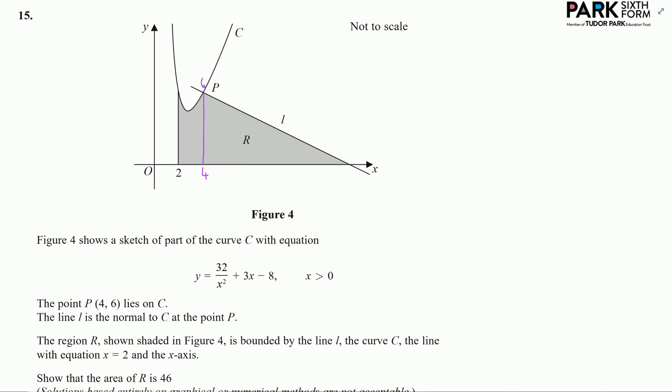I'm asked basically to prove that the region that's been shaded here is 46 units. Now we're going to do this in two parts. We're going to find the area of the triangle and integrate to find the area under the curve.